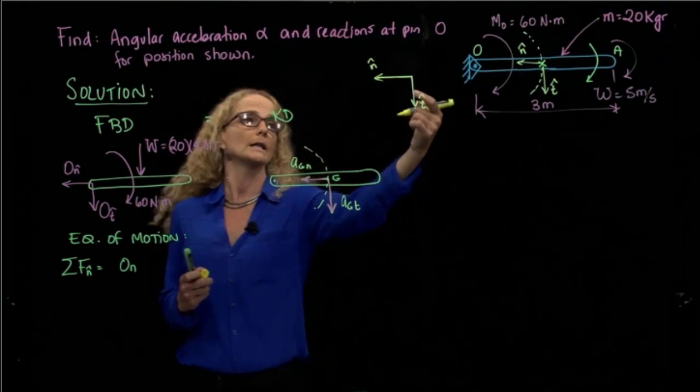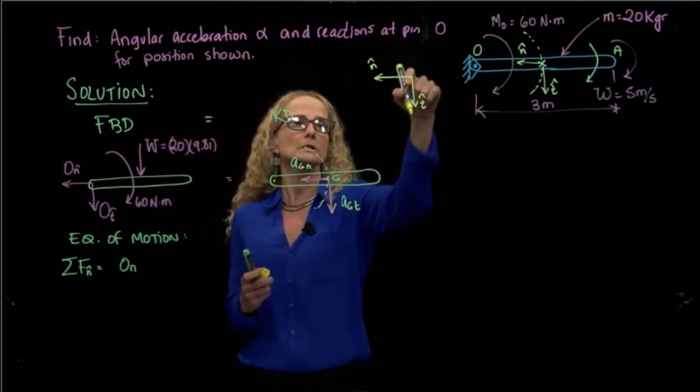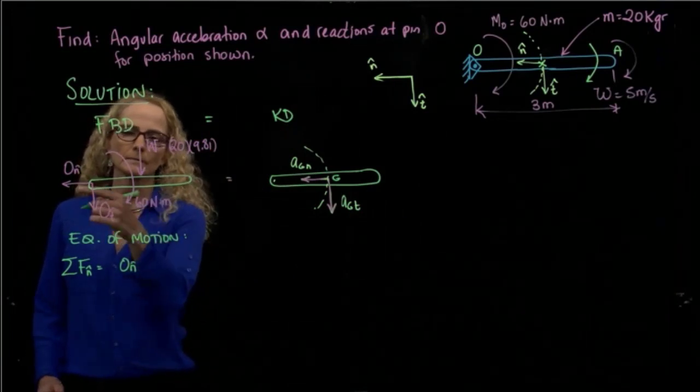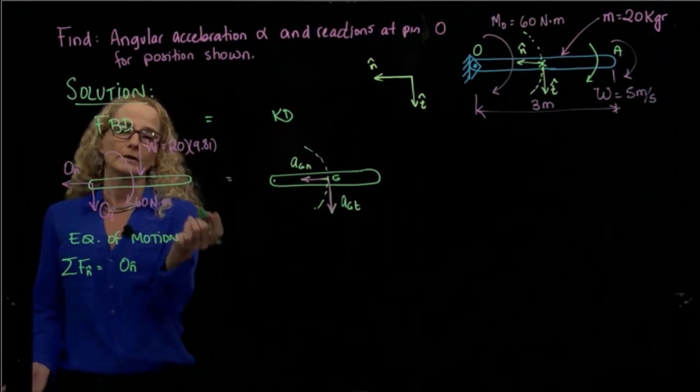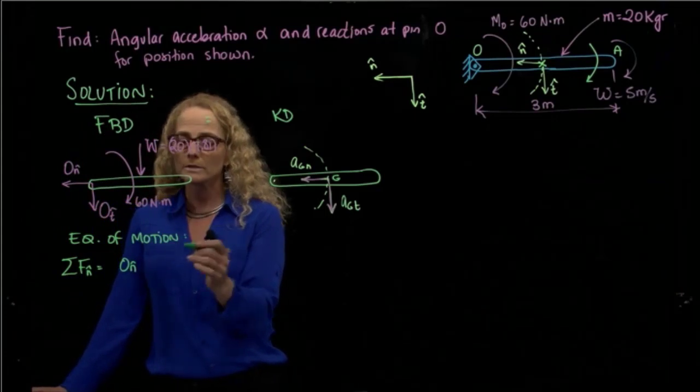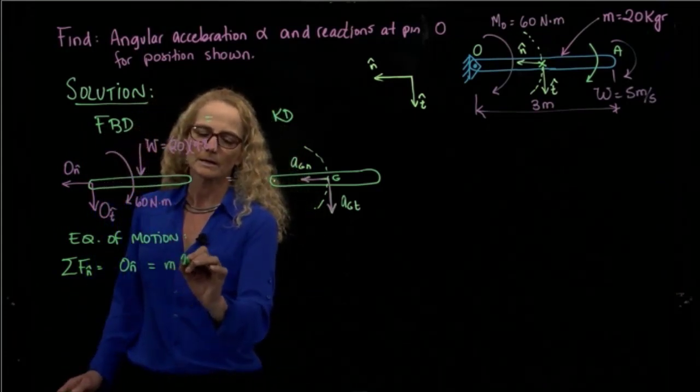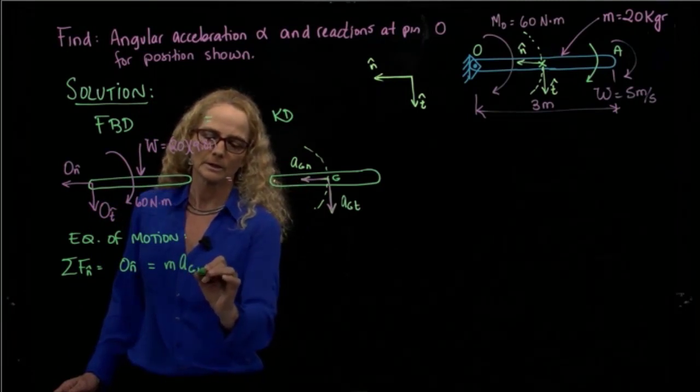And I do not have any other external force, so that will be equals to my mass times my acceleration in N. You remember the acceleration in N will be equals to angular velocity squared times the radius.